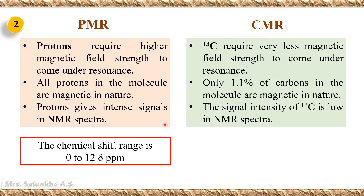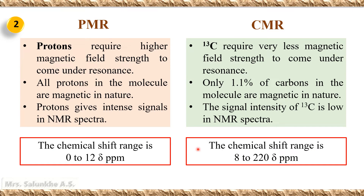In case of PMR spectroscopy, the chemical shift range is 0 to 12 delta ppm, as protons require a higher magnetic field strength to come under resonance. While in case of CMR spectroscopy, the chemical shift range is very wide — it is from 0 to 220 delta ppm.